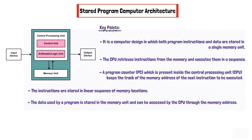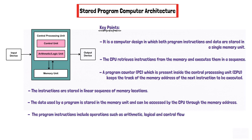The CPU reads the instructions from the memory, decodes them to determine the meaning of the particular instruction, and also executes it. The program instructions include operations such as arithmetic, logical, and control flow instructions. The control flow instructions are used to change the order of the non-executed statements. The stored program computer architecture is basically used in modern computers such as servers and supercomputers.